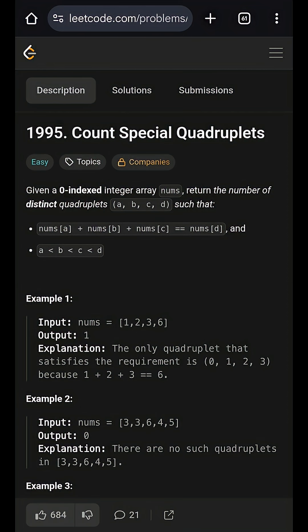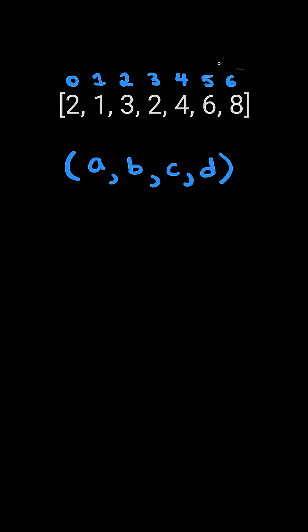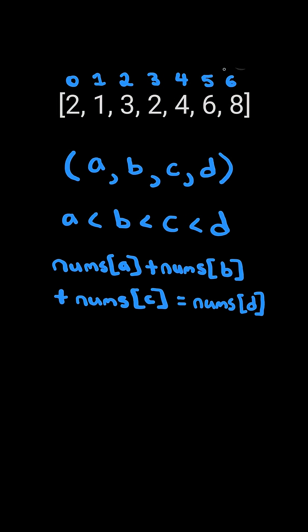Count special quadruplets. Find a quadruplet of indices where the indices are strictly increasing and the values at a, b, and c sum up to the value at d.